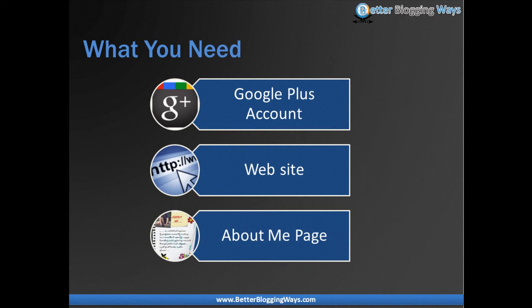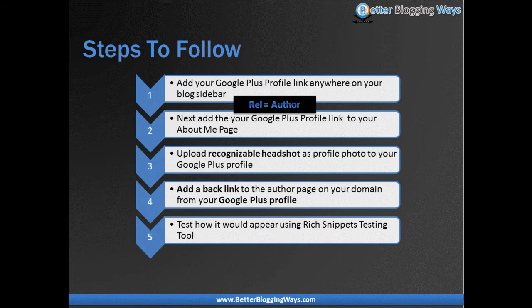I'll go through the steps before showing the hands-on demo. First, you need to have your Google Plus profile link in your sidebar, or at least in a location where it will always be present. In this link you need to make sure you add the tag rel equals author. Then in your about me page you need to add another link to your Google Plus profile and tag it with rel equals me.